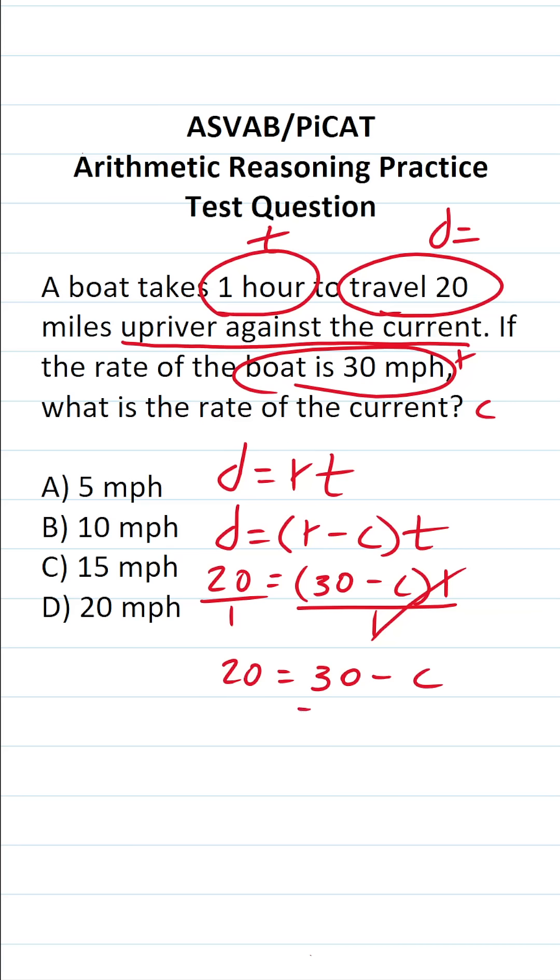Let's subtract 30 from both sides to get C by itself. This crosses out. 20 minus 30 is going to be negative 10 equals negative C. We want to solve for C, not negative C.